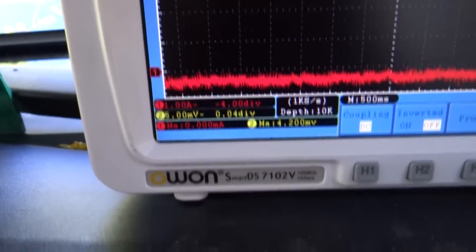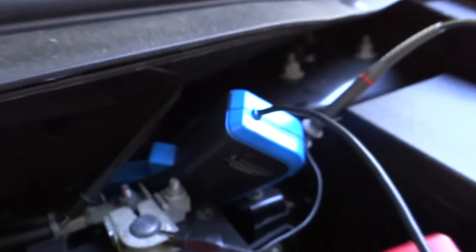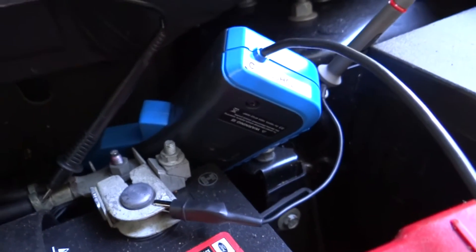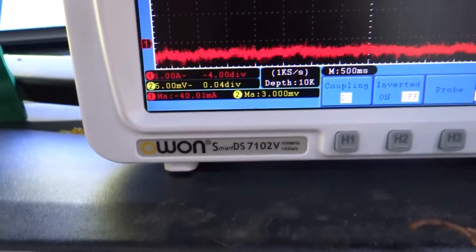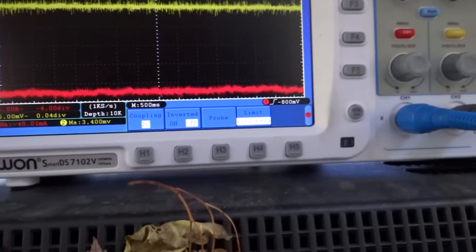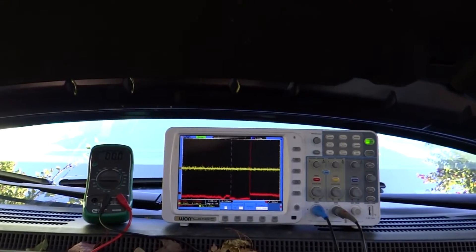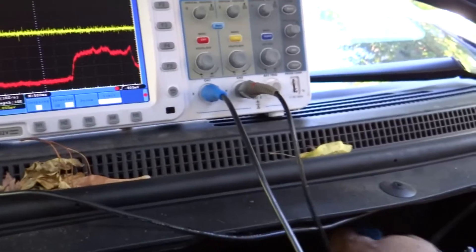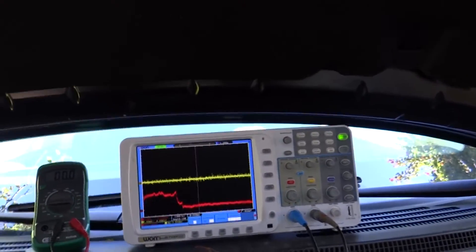What we have on the red trace is our amperage lead, our Hantek CC-650 650 amperage amp clamp, and that is around our negative battery terminal. We are reading minus 40 milliamps - that's not right. We need to zero that out. Let's zero this thing out.